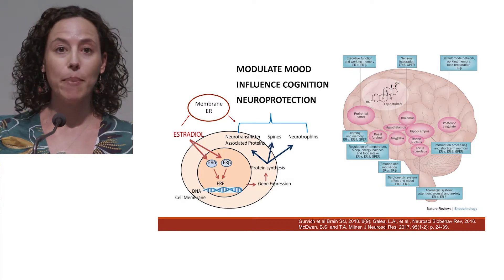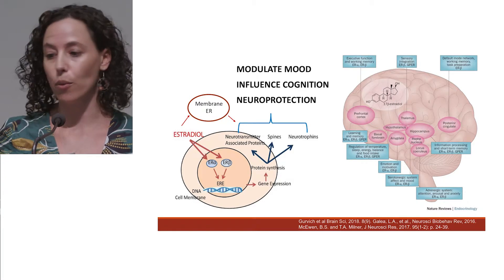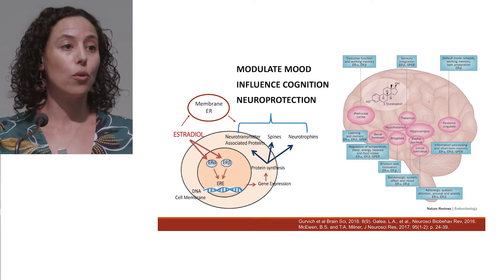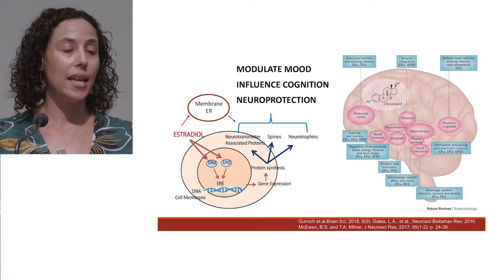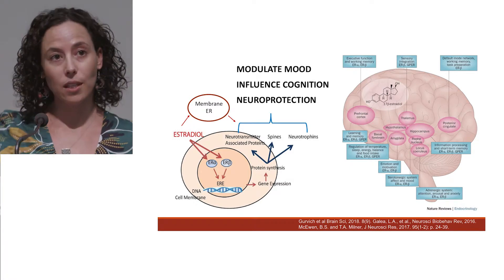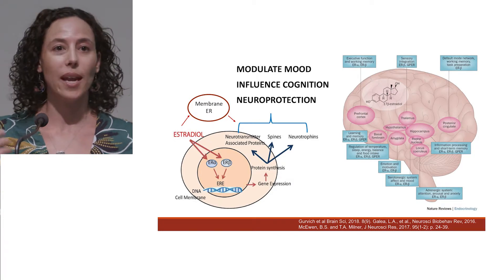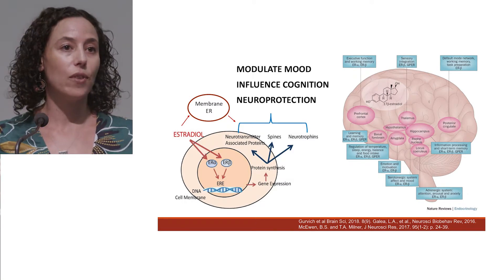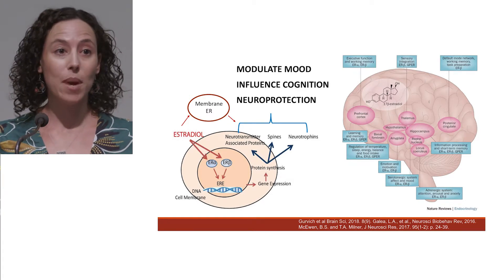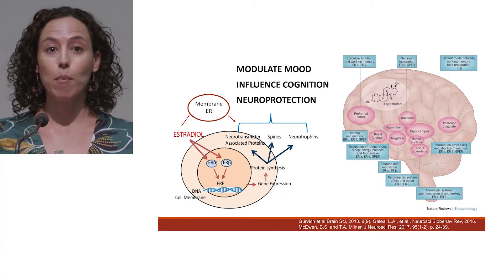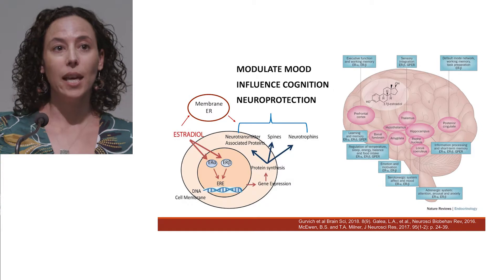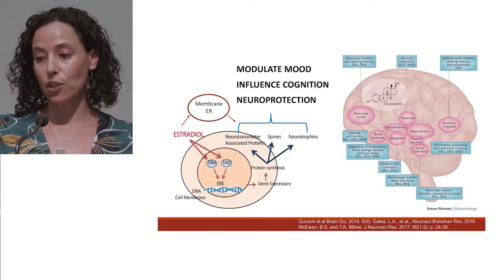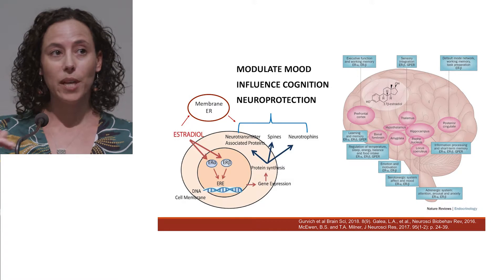Oestradiol can also act on membrane bound oestrogen receptors which can have actions on neurotransmitter pathways. Oestrogen receptors are located in brain regions critical to our thinking skills, cognition, and regulation of emotions — for example, the prefrontal cortex, which regulates executive functions, planning, decision making, and organising behaviour. There's also a high density of oestrogen receptors in the hippocampus, heavily involved in memory, and in the amygdala, which is important for emotion regulation. Collectively, oestradiol has the potential to modulate mood, influence cognition, and provide neuroprotection against inflammation across our lifespan.